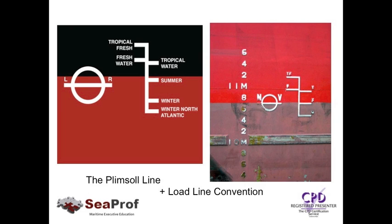Also on the left, you'll see Tropical Fresh and Freshwater marks, which relate to the fact that a vessel will float at a lower draft — a greater depth — in freshwater, because freshwater is of a lower density than seawater. For example, if you were loading a vessel in the Amazon River, which is freshwater, you'd be able to load her right down to the tropical freshwater mark. What would then happen is that as the vessel proceeded to sea and water density increased, she would automatically rise to the tropical water mark.